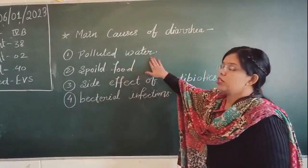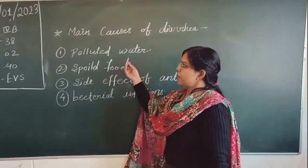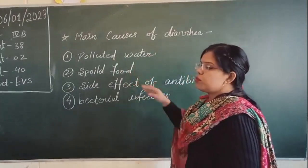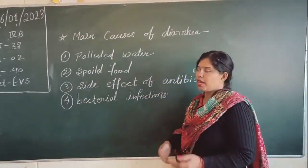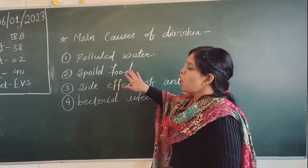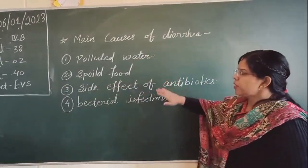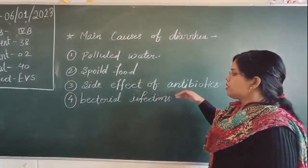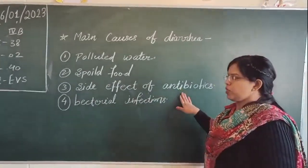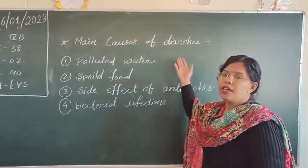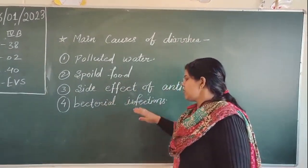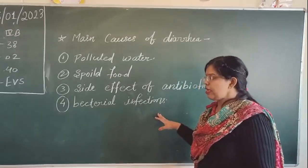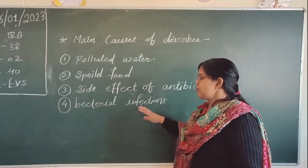The first cause is polluted water. If we drink polluted water, it can be the main cause of diarrhea. The second is spoiled food — if the food is spoiled, it can cause diarrhea. The third is the side effect of antibiotics. We take some medicines that have a different effect on our body, which is not good. These antibiotics can also cause diarrhea. If the hands are not washed properly and we eat something with dirty hands, this leads to a bacterial infection.